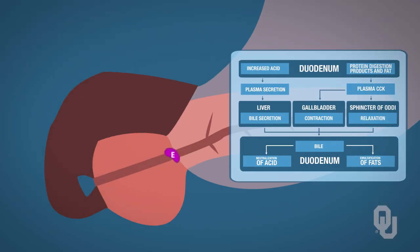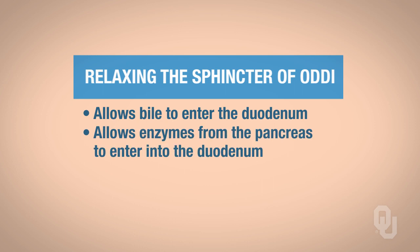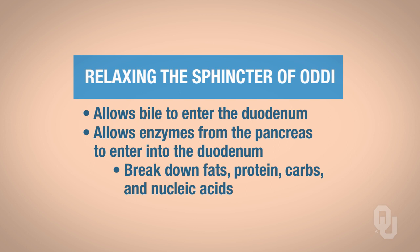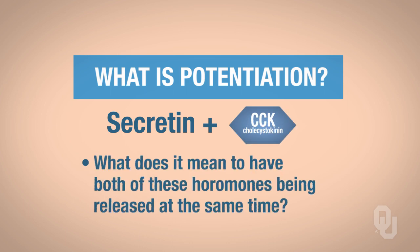Those enzymes are going to get secreted into the duodenum, and the only time they can do that is when the sphincter of Oddi is relaxed. So relaxing the sphincter of Oddi not only allows bile to enter the duodenum, it also allows the enzymes from the pancreas to enter the duodenum so that we can break down fats, protein, carbs, and nucleic acids. What is potentiation? Think about potentiation in terms of secretin and CCK and what it means to have both of these hormones being released at the same time.